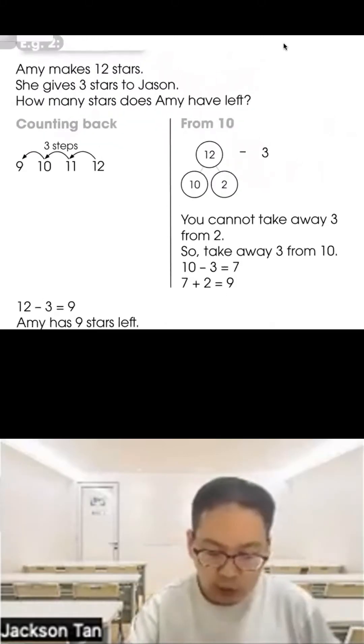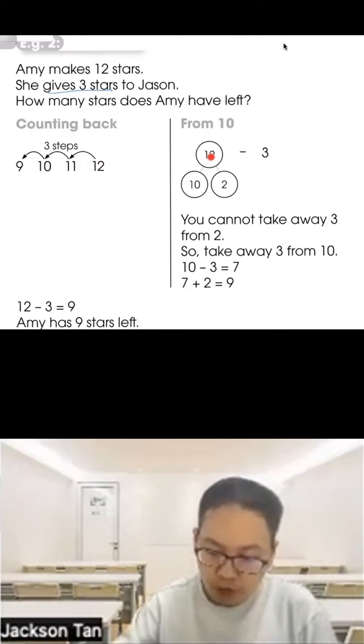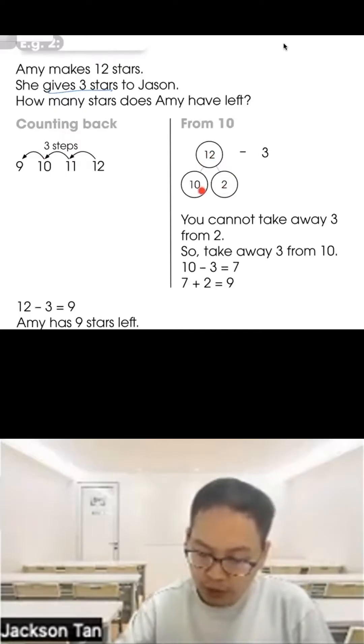Example 2: Amy makes 12 stars. She gives 3 stars to Jason. How many stars does Amy have left? We can count back from 12: 11, 10, 9. Or, split 12 into 10 and 2. Since we can't take 3 from 2, take it from 10: 10 minus 3 equals 7, plus the remaining 2 gives 9. Amy has 9 stars left.